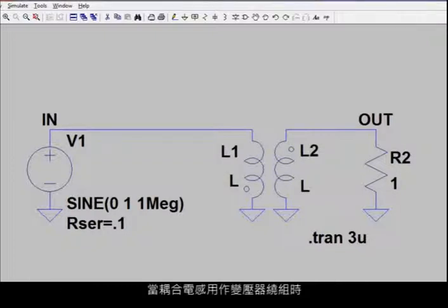When coupled inductors are used as transformer windings, individual winding inductances rather than the turns ratio need to be specified. Therefore, the inductance ratio needs to be set to be proportional to the square of the turns ratio.